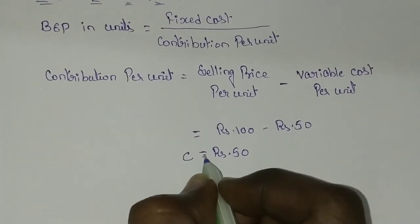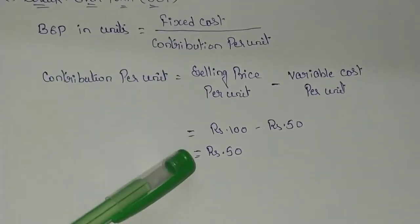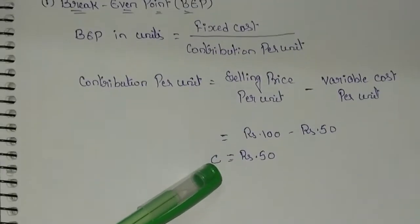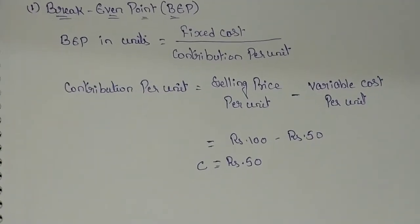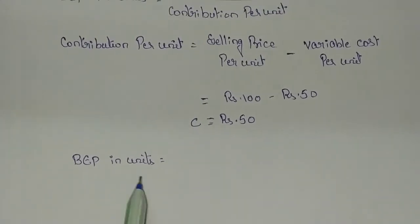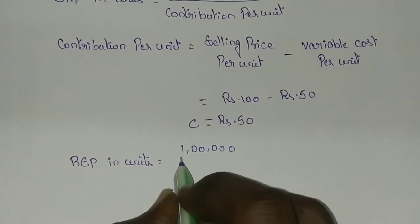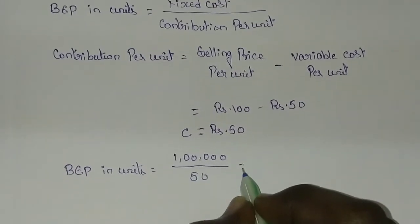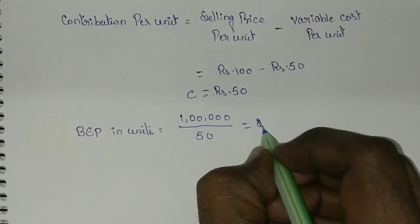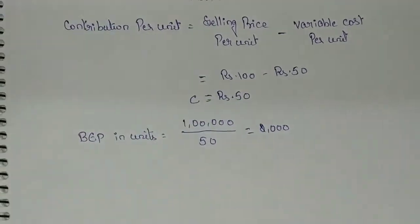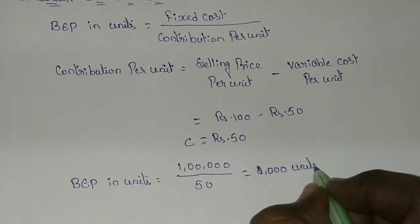C represents contribution. We now have both fixed cost and contribution per unit required for calculating the breakeven point in units. Substituting the values in the formula: breakeven point in units is fixed cost 1 lakh rupees divided by contribution per unit 50, giving a value of 2,000 units.